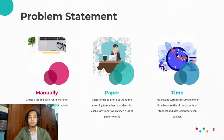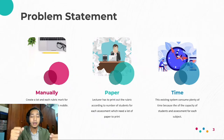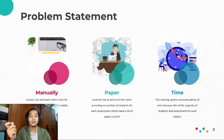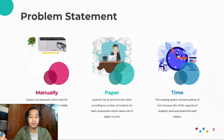Proceeding with the problem statement, there are three problem statements. First is manually — lecturers create each rubric mark manually and not using mobile, meaning the lecturer has to sit in front of a desktop or PC to make rubrics. Second is paper — lecturers have to print out the rubric according to the number of students for each assessment, which requires a lot of paper. Third is time — the existing system consumes plenty of time due to the capacity of students and assessments, as there will be 40 to 50 students in a class.